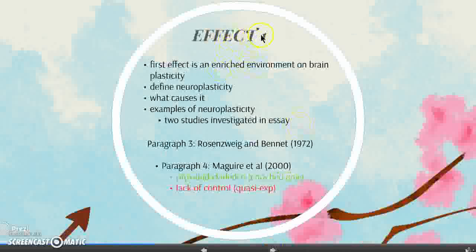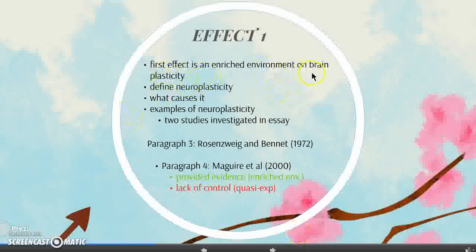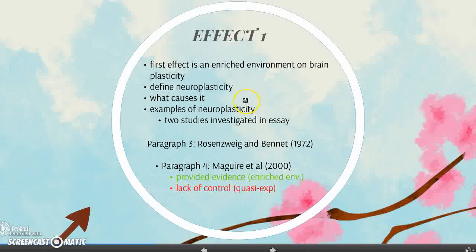Effect one is the enriched environment, and that will be a whole paragraph. The first effect of an environment on physiological processes is an enriched environment on neuroplasticity. You have to define neuroplasticity — it's the brain's ability to rearrange its neural connections as a result of learning or a new experience. What causes it is stimulation from the environment, linking back to the question. Basically, when a person does something new every day, the brain rearranges and adapts to the conditions.